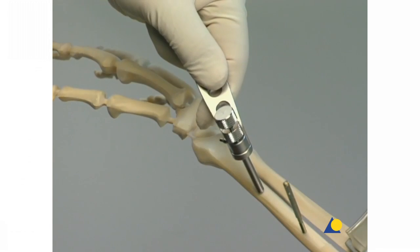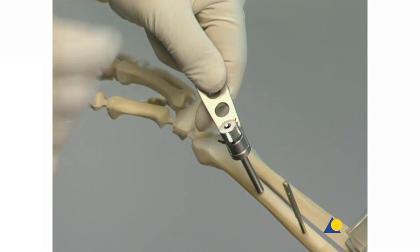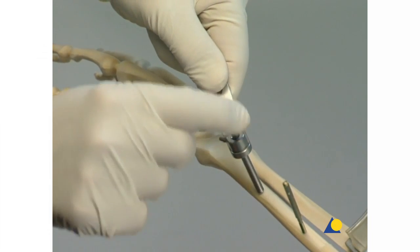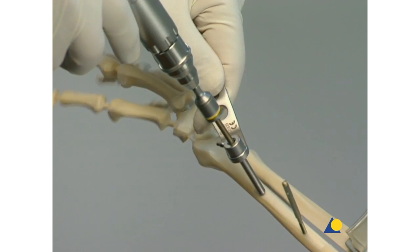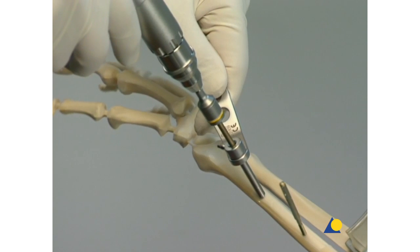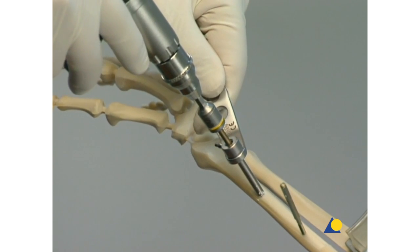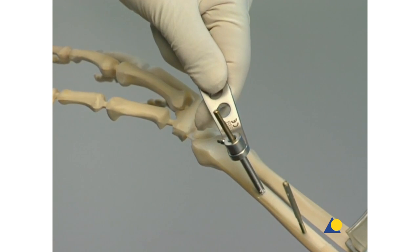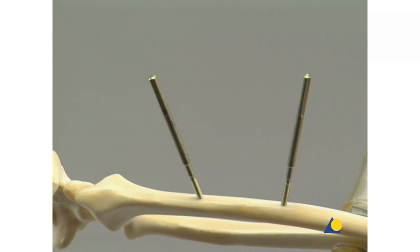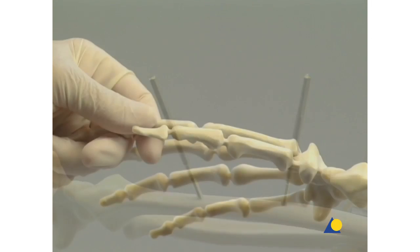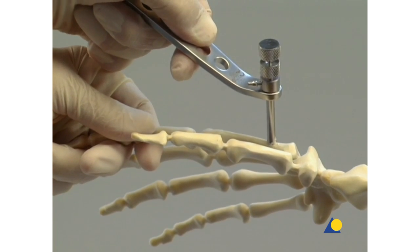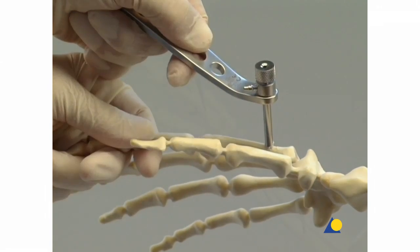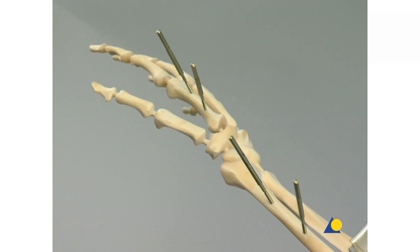The remaining Schanz screws are now inserted in the same way. For best stability, spacing should be maximized and the distal Schanz screw should be as close to the fracture as possible. Two Schanz screws should be inserted in both the diaphysis of the radius and the metacarpal. The position of the Schanz screws should be determined according to the fracture, the soft tissues, and the anatomical situation.